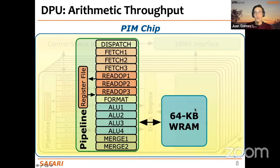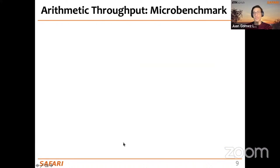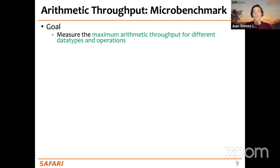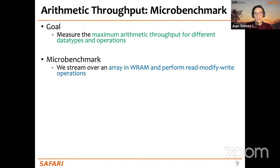We start with the arithmetic throughput that the DPU pipeline can achieve. The WRAM is the place where we store input and output operands, so every time we perform an operation we read data from WRAM and write results to WRAM. The goal is to measure the maximum arithmetic throughput for different data types and operations.